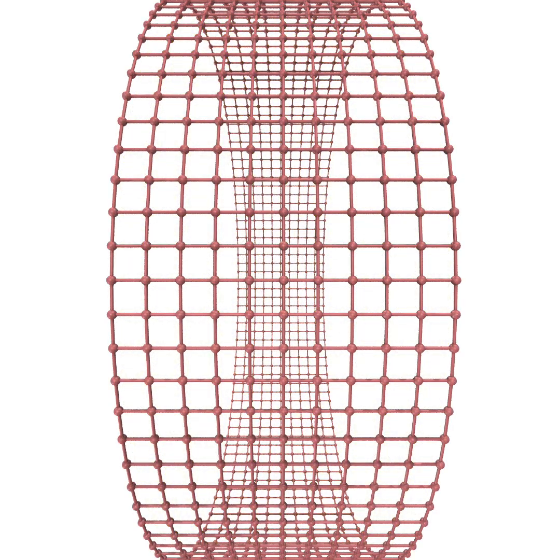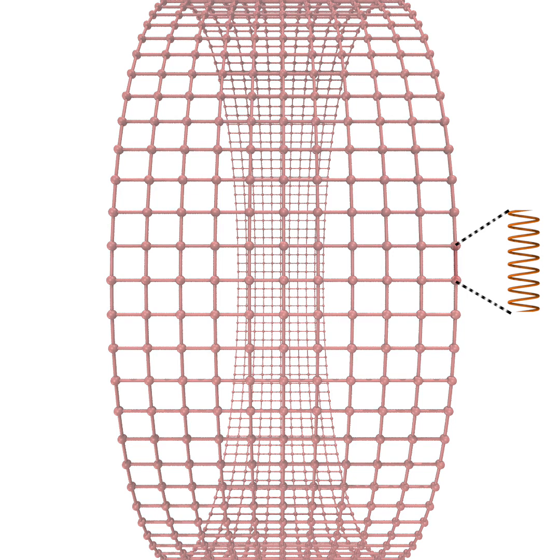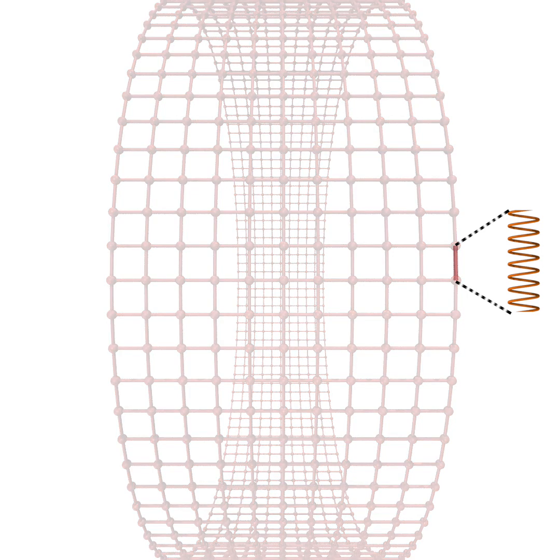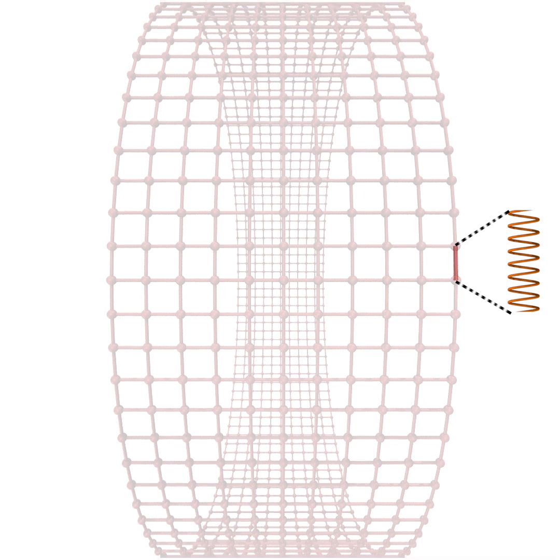The cell wall shown in pink is modeled as a cylindrical grid of beads, connected by circumferential glycan and horizontal peptide springs. We model the cell wall as a semi-rigid layer, such that as the membrane is pulled in, space is created between the cell wall and the membrane.